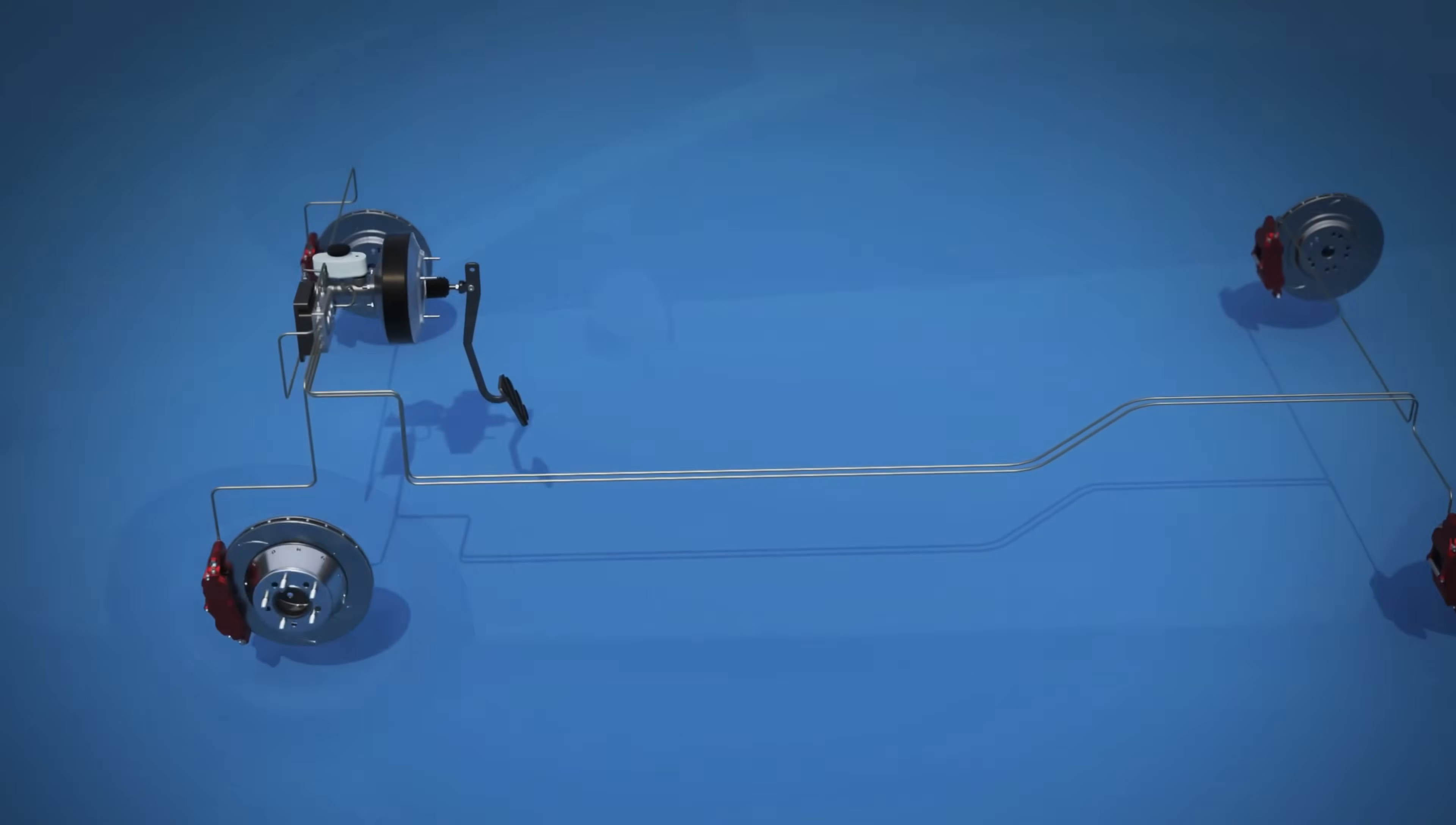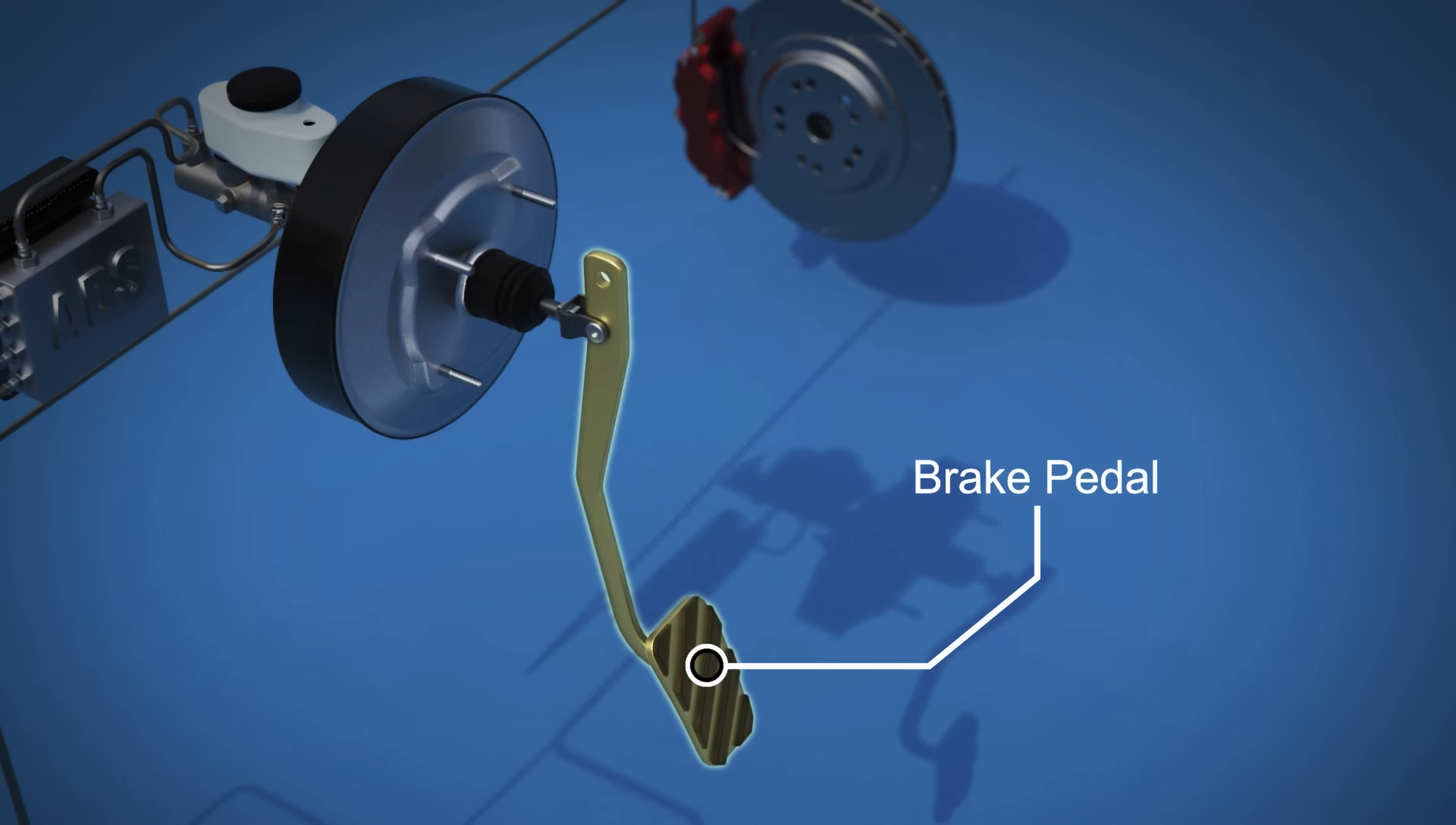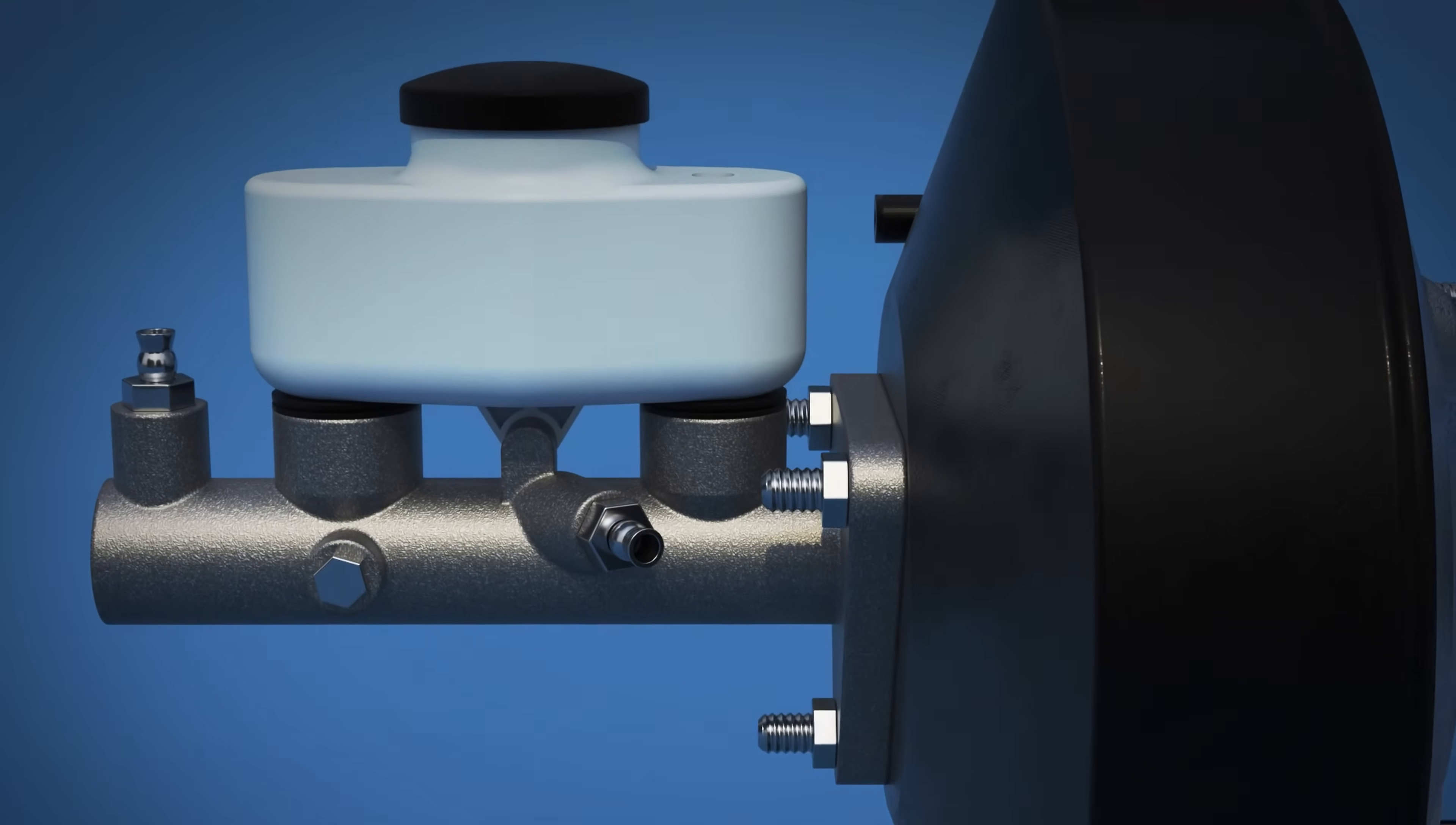Modern hydraulic braking systems consist of 10 main components: the brake pedal, the pushrod, the brake booster, the main cylinder, the brake fluid reservoir,